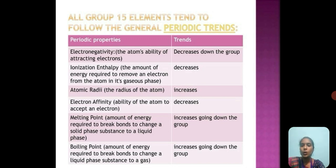Melting point is the amount of energy required to break the bond to change from solid to liquid phase. The melting point increases going down the group, whereas the boiling point also increases going down the group. The difference between boiling point and melting point is the change of phases from liquid to gas means boiling point, and solid to liquid means melting point.